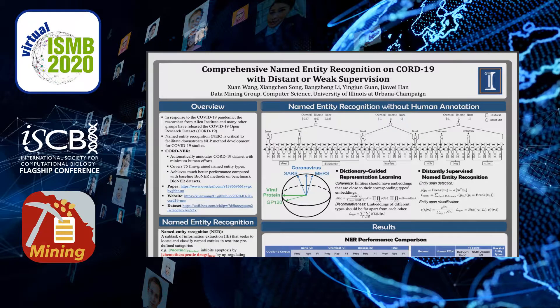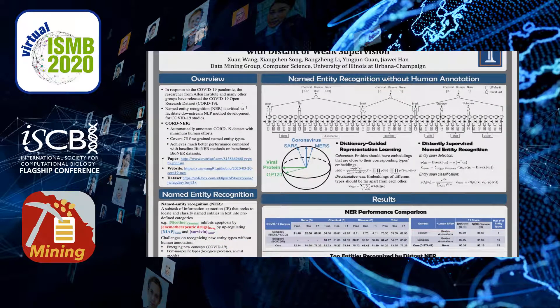Let's first take a look at the overview of this task. In response to the COVID-19 pandemic, researchers from Allen Institute and many other leading research groups have released the COVID-19 open research dataset. It contains the most up-to-date literature research papers related to COVID-19 and many other coronavirus groups. Named Entity Recognition is a task to automatically recognize and type those entities in raw text. It is critical to facilitate many other downstream NLP method development, such as relation extraction, literature search, and question answering for COVID-19 studies.